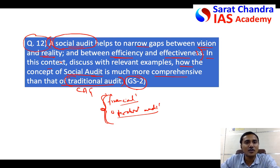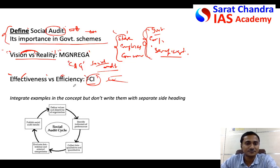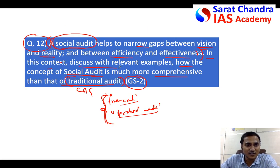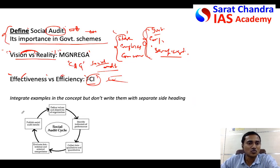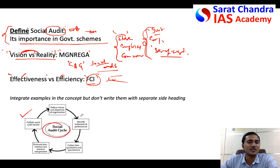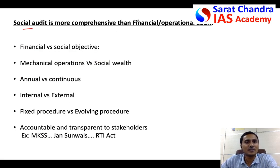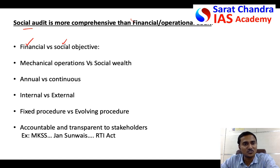After finishing the first part of the question, come to the actual question: how is social audit more comprehensive than traditional audit? On this part you have to spend the majority of your answer. Remember, since they ask you to discuss with relevant examples, some students keep adding examples separately — do not do that. While discussing the concept itself, integrate the examples. Also, those who can draw a diagram of social audit can do so, because the evaluator will know you have good knowledge of it.